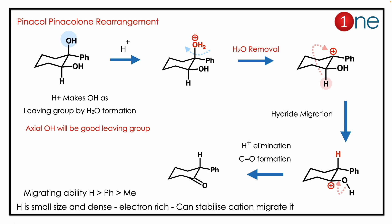The carbocation formed must then be quenched. The only quenching pathway available is hydrogen migration. The hydrogen migration leads to a carbocation near the alcohol, which is quenched to form a carbonyl — a ketone.